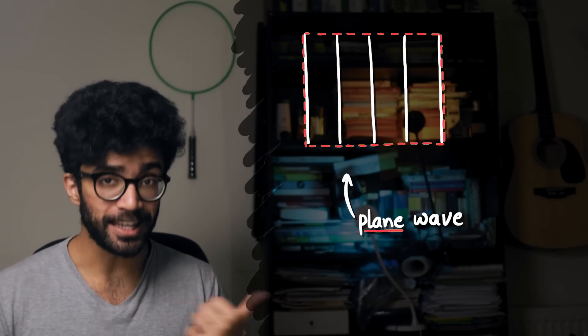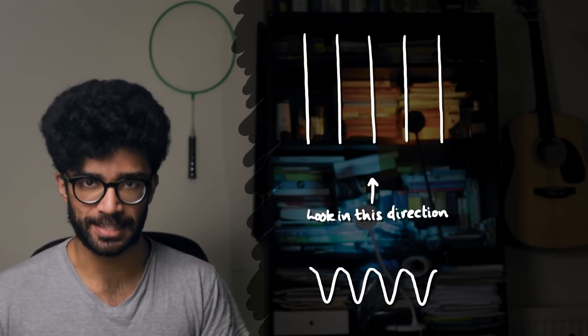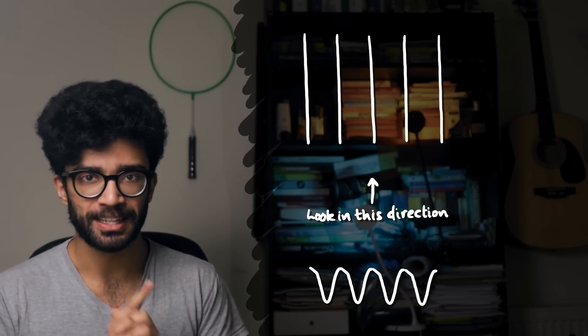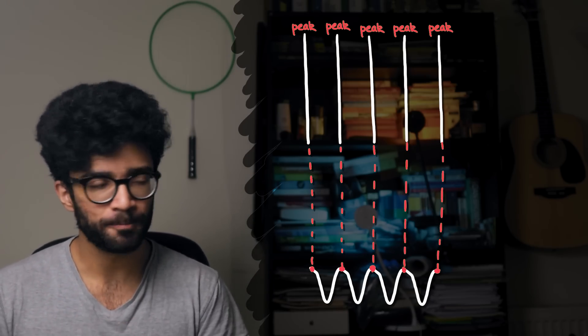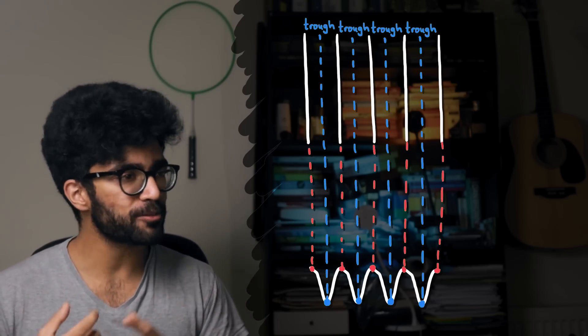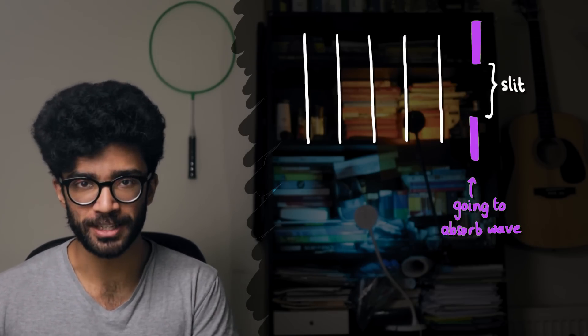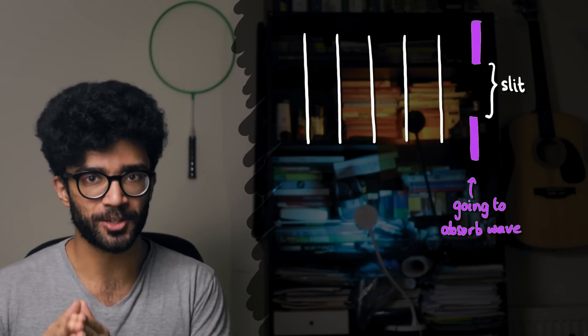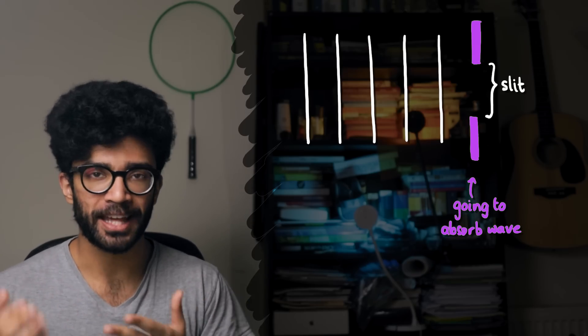First of all, what exactly is diffraction? To answer this, let's imagine a wave of light moving from left to right. We're looking at the wave from above, and this particular kind of wave is known as a plane wave — because it looks like a two-dimensional flat surface. If we placed our eye to the side and looked at the wave, we'd see it oscillating up and down. Every single straight line in this diagram corresponds to a peak of the wave, with troughs between peaks. This plane wave is moving toward a material that won't let any light through, but the material has a little gap — a slit — and the light wave can travel through this slit.